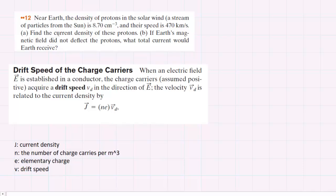In this question we are asked to find the current density of this stream of protons. We know the current density is symbolized by J, and it equals N, the number of charge carriers per meter cubed, times e, which is the elementary charge, times the drift speed of the protons.